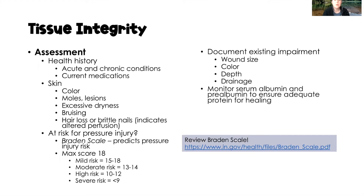From an assessment standpoint, we want to start with the health history, including any acute or chronic conditions and current medications. For a skin assessment, we want to look at color, look for any moles or lesions, check for excessive dryness, excessive bruising, and then hair loss and brittle nails — all good indicators of altered perfusion that we want to be assessing for.